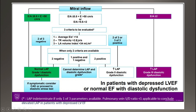If TR is absent — as it is in many patients — we check the other two parameters. If both are positive, the patient has diastolic dysfunction type 2. If both are negative, type 1. If one is positive and one negative, we check additional parameters. The most important in this case is the S to D ratio: if S is less than D, the patient has high left atrial pressure and falls into grade 2.